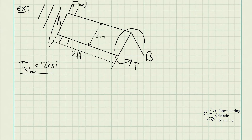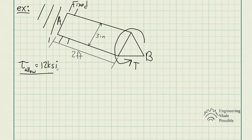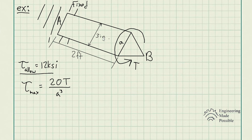Let's go ahead and do an example. The problem statement is: if the shaft has an equilateral triangle cross-section and is made from an alloy that has an allowable shear stress of 12 KSI or 12,000 pounds per square inch, determine the maximum allowable torque T that can be applied. We're given the maximum allowable shear stress, the sides of the triangle A are 3 inches, the shaft length is 2 feet, fixed at point A, with torque T applied at point B.